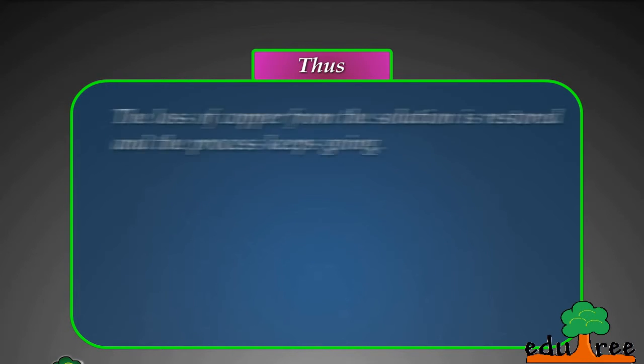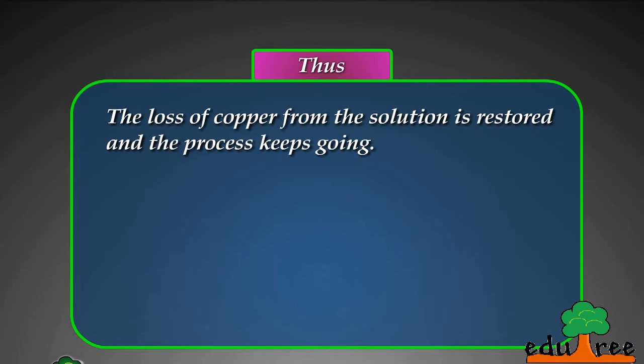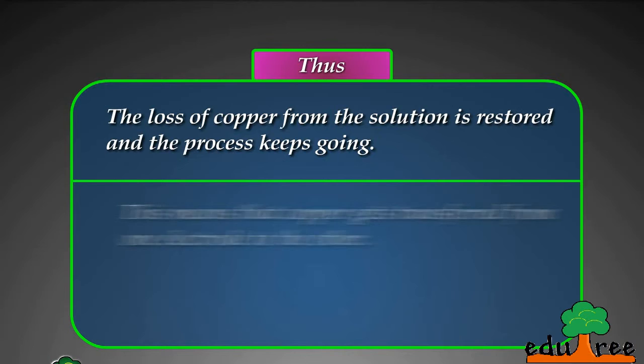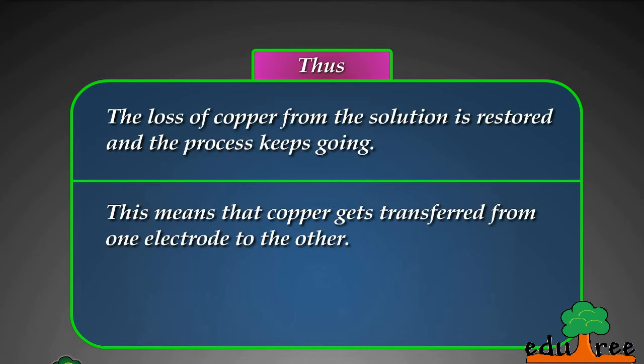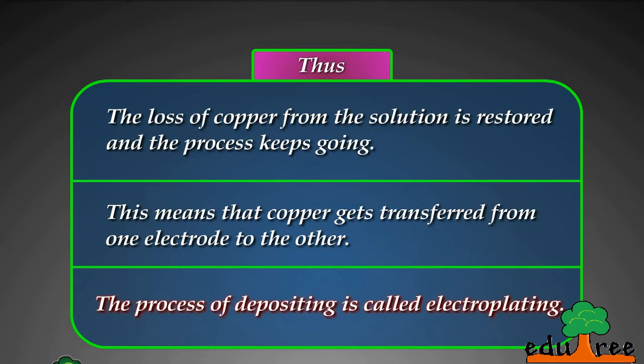Thus, the loss of copper from the solution is restored and the process keeps going. This means that copper gets transferred from one electrode to the other. The process of depositing is called electroplating.